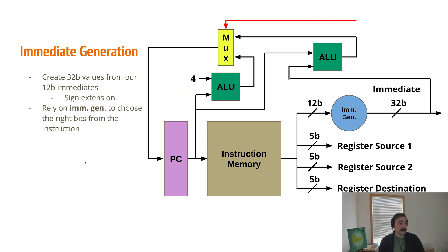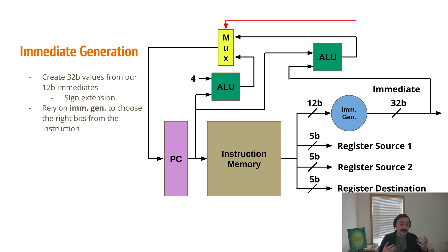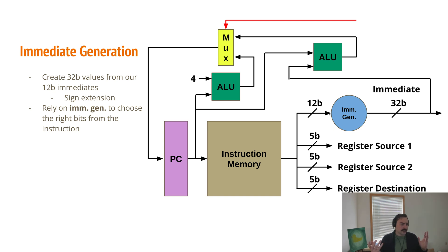The answer is we don't add a 12-bit value to a 32-bit one directly. What we do is we create a 32-bit value from our 12-bit immediate through sign extension. If it's a positive number, we sign extend 0 all the way to the MSB, and if it's a negative number, we sign extend 1 all the way to the MSB — the exact same value, but now in 32 bits. So instead of adding a 32-bit value with a 12-bit value, now we're just adding two 32-bit values together with this immediate generation block. We rely on this block to know exactly how to treat the bits coming from our instruction, since different instructions have slightly different formats in terms of their fields.